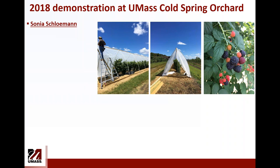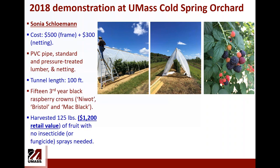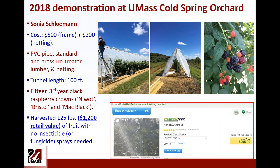One example at UMass: in 2018, Sonny Schloman developed an exclusion structure. The cost was about $300 for the frame and $300 for the netting, made from PVC pipe, pressure-treated lumber, and netting. The tunnel was about 100 feet long and the crop was raspberries. At the end of the season, just in this small area, the crop value was $1,200 and they did not spray any insecticides or fungicides. The net we have been using is ProTechNet from Canada. It's a strong material that can last several years.